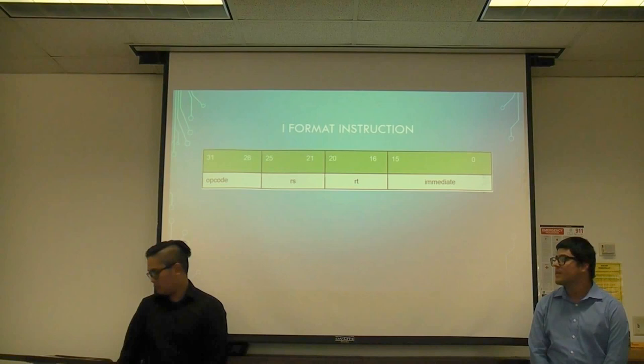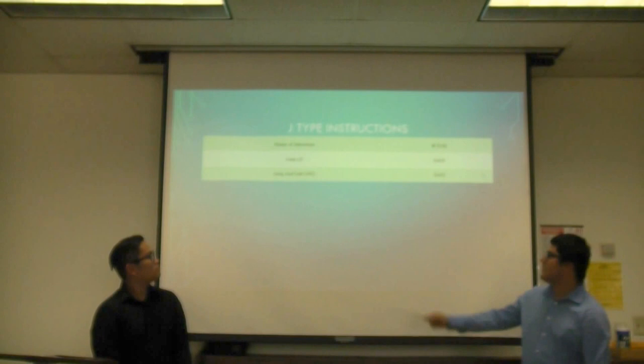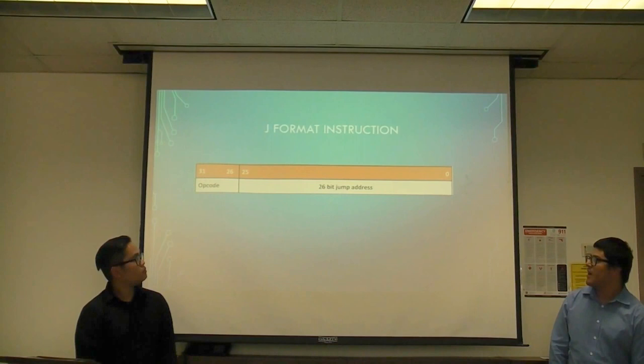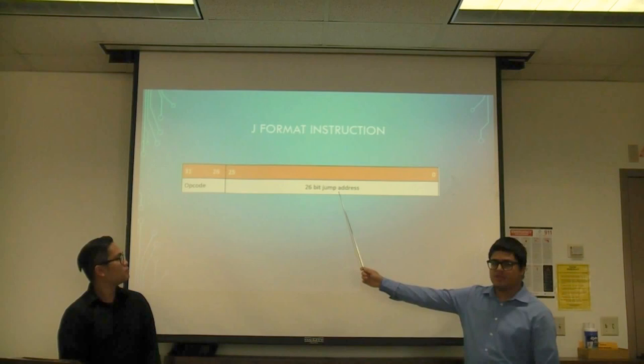These are our J-type instructions. We only have jump and jump and link. The J format instruction has just an opcode and a 26-bit jump address offset.